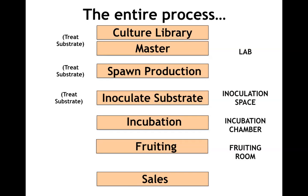Spawn production takes those masters and grows them out usually on grain that is sterilized. You can divide those out in multiple rounds — another process where we treat substrate with sterile pressure treatment, often grain to grain or grain to sawdust. That spawn is then used to inoculate substrates intended to fruit mushrooms. At this stage we might add a mixture of carbon and nitrogen, whether a log or straw which is low in nutrient load, or a supplemented sawdust block with grain byproducts.